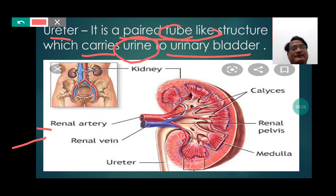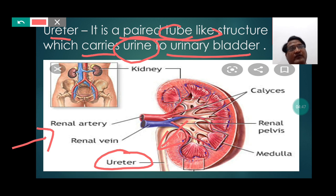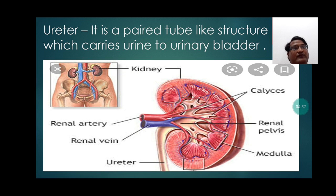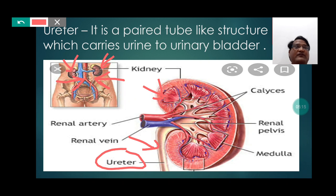In this picture you can find the ureter — a tube-like structure which is two in number. Each ureter is attached to a single kidney. There are two kidneys — a pair of kidneys — present in the human excretory system, and that is why we find two ureters. The kidney is connected with the ureter.